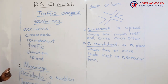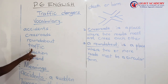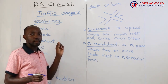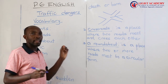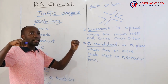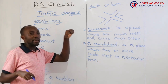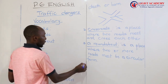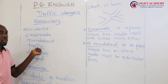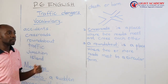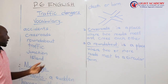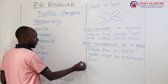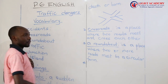Then we have another one, which is traffic. Traffic refers to the vehicles that we see on the road — each vehicle we are going to call it traffic. Therefore, under this word traffic, most of you know traffic jam, traffic lights, and so on. Let's look at one of them.